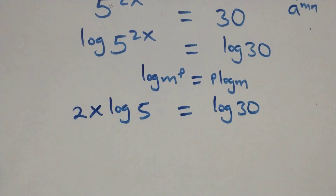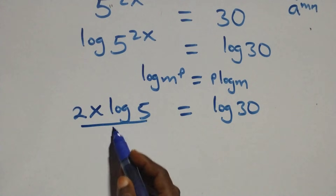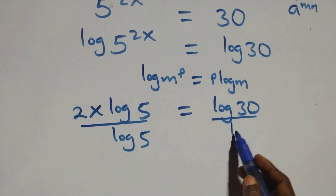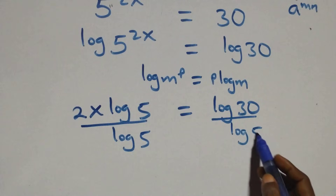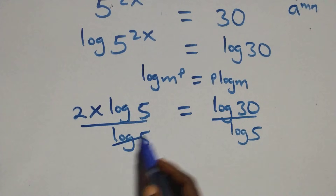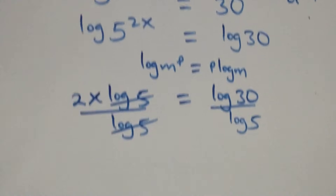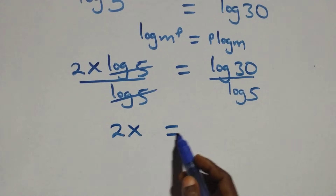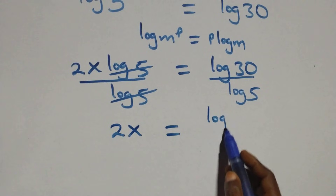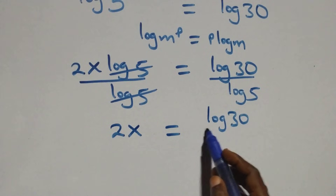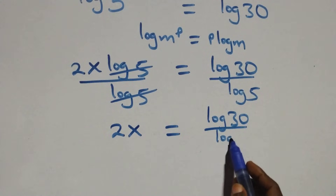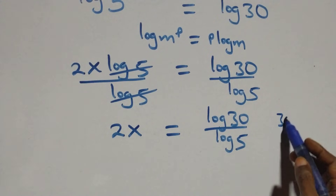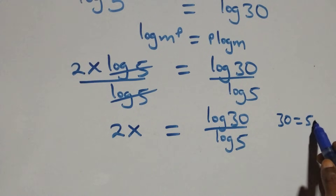From here, we divide both sides by log 5. Log 5 cancels each other and we have 2x equals log 30 over log 5. Then, 30 can be written as 5 times 6.